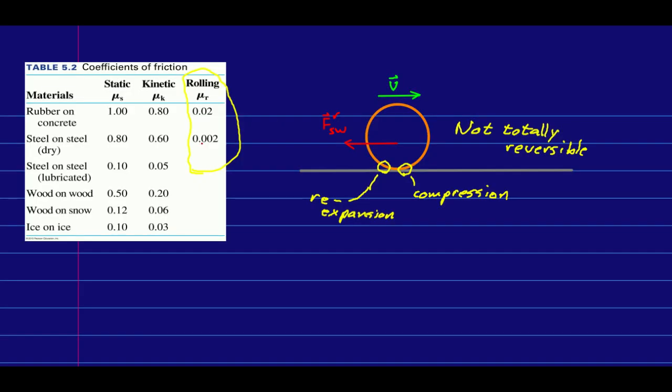But notice that these rolling friction coefficients are very small. And so that tells you that forces of rolling friction are also very small. And so we can pretty much always ignore them for our purposes. And we will.